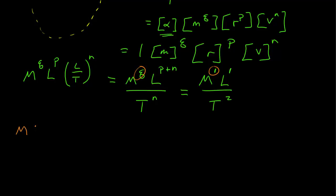So looking at the mass, that tells us that q is equal to 1. Looking at the length, that tells us that p plus n is equal to 1. And looking at the time is telling us that n is equal to 2.